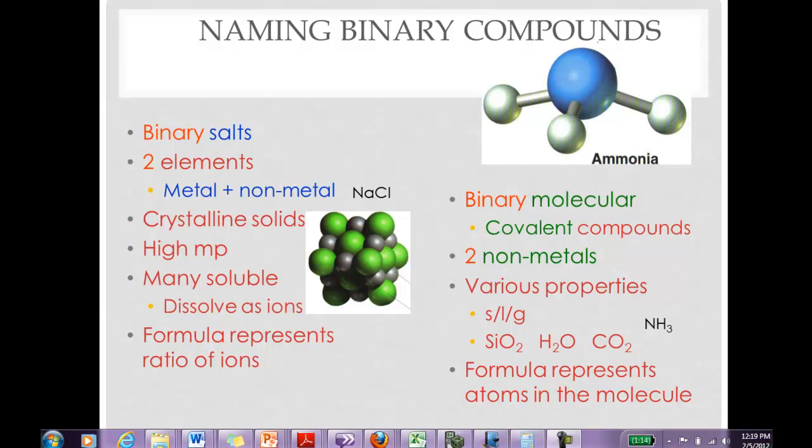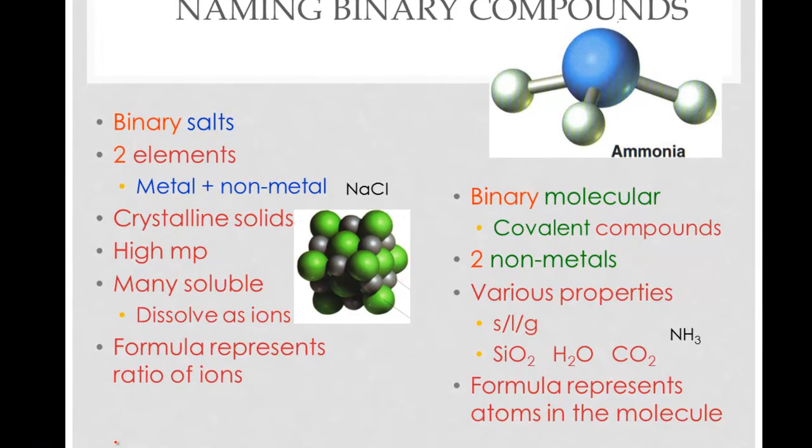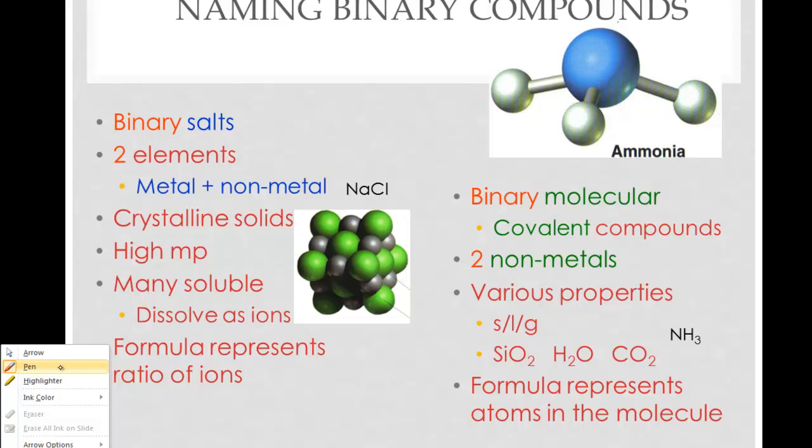Naming binary compounds. We can name binary compounds once we know some of the names and symbols for the elements and know which ones are metals and which ones are non-metals. A binary compound means that the compound consists of two elements only.